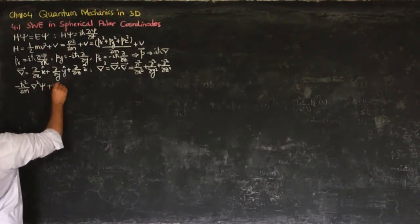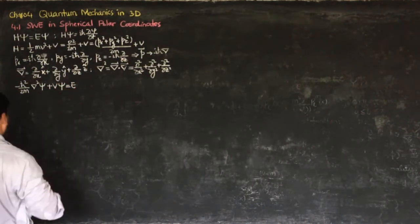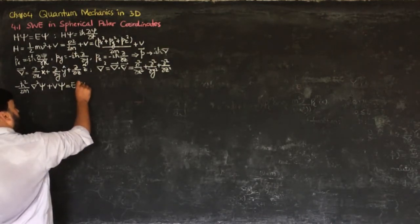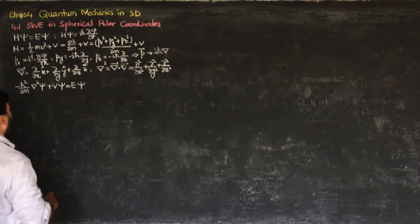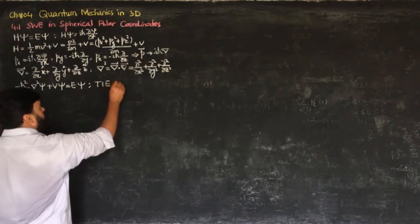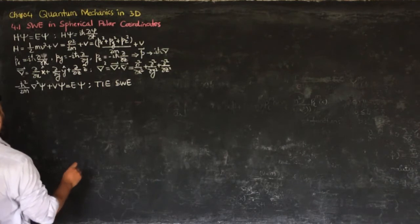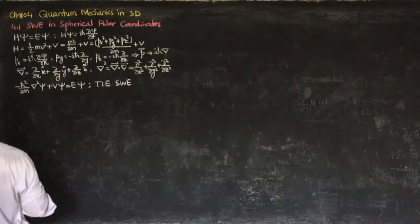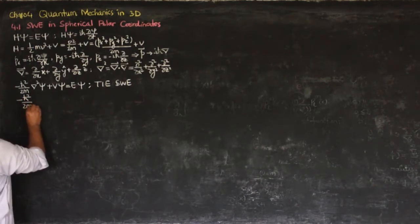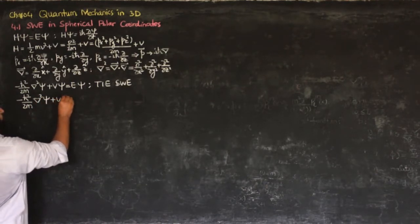So I can write the Schrödinger equation in three dimensions as: minus H-bar² over 2m times del²-psi plus V-psi equals E-psi for the time-independent case. Similarly, the time-dependent Schrödinger wave equation is minus H-bar² over 2m times del²-psi plus V-psi equals i-H-bar times the partial of psi with respect to t.